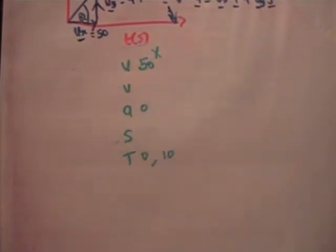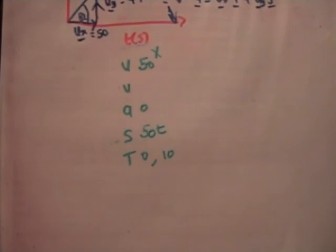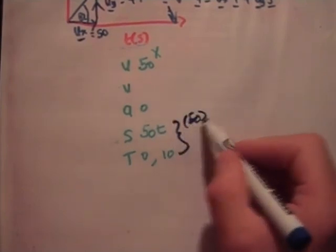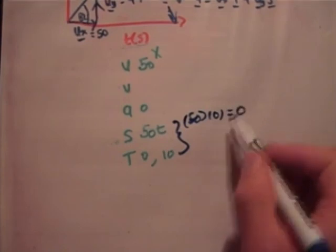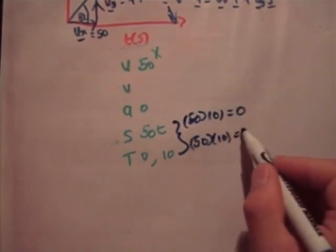So what's the distance? We're going to use ut plus a half at squared, and that's just going to be 50t. So as a result, the two distances associated with time t is equal to 0 and time t is equal to 10 are 50 times 0, which is equal to 0, and 50 times 10 is equal to 500.